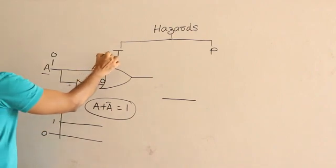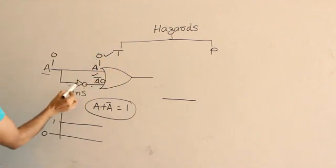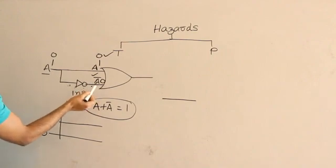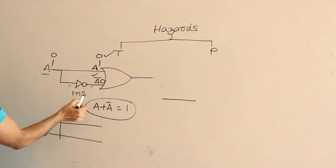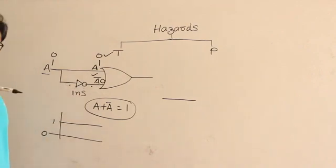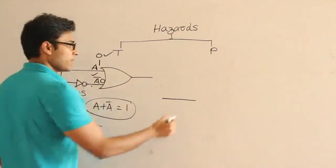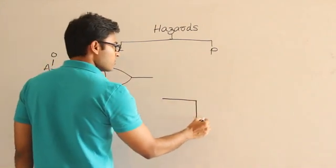So suddenly what happens is, A and A prime both will take the value of 0. Are you getting this? Before this A prime converts to 1, it is going to take 1 nanosecond because the signal has to propagate to this NOT gate. So for that 1 nanosecond, which means for a temporary amount of time, this signal is going to drop down to 0.